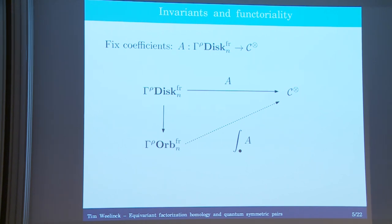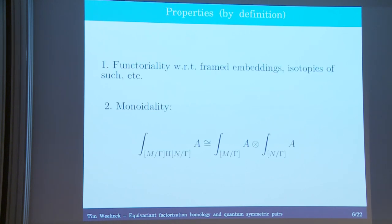If you don't know what left Kan extensions are, don't worry about the details — let me tell you some properties this construction has. First, by definition it's a functor, so this thing is functorial with respect to the framed embeddings, which were our morphisms, but also the higher morphisms like isotopies of embeddings, isotopies between isotopies, and so forth.